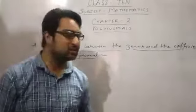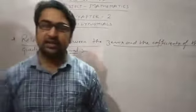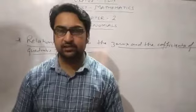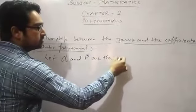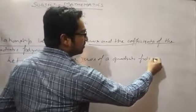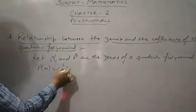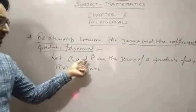Now the next topic is the relationship between the zeros and the coefficients of the quadratic polynomial. The quadratic polynomial is in the form ax² + bx + c. Let alpha and beta be the zeros of the quadratic polynomial P(x) = ax² + bx + c. So we have two zeros, alpha and beta.